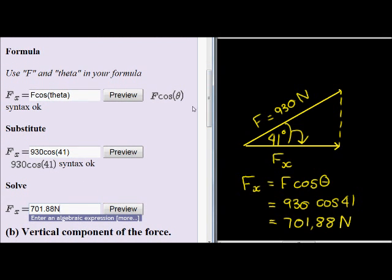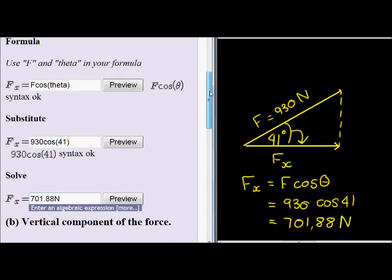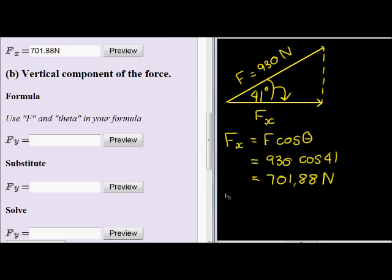Next question says we want the vertical component of the force. For the vertical component, we've learned that that is this component, the one that goes up here. For that vertical component, we notice that it is in the opposite direction of our angle. Since it is in the opposite direction of the angle, we know that we use sine, since we want the opposite and we have the hypotenuse.